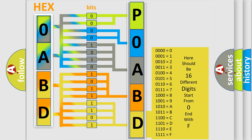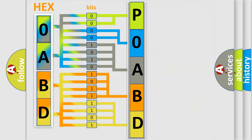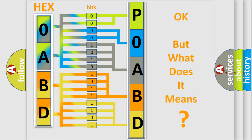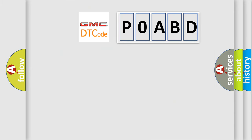We now know in what way the diagnostic tool translates the received information into a more comprehensible format. The number itself does not make sense to us if we cannot assign information about what it actually expresses. So, what does the Diagnostic Trouble Code POABD interpret specifically for GMC car manufacturers?